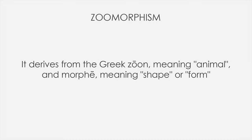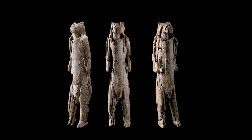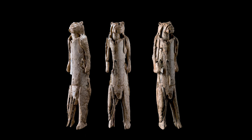Back to our zoomorphism. What does this word mean? It derives from the Greek 'zoon' meaning animal and 'morphe' meaning shape or form. So zoomorphism means assigning a person, event, object, or a deity with animalistic characteristics. The Lion Man of the Holstein Staddle is a perfect example, since we can see that the statuette has a human body with a lion head.